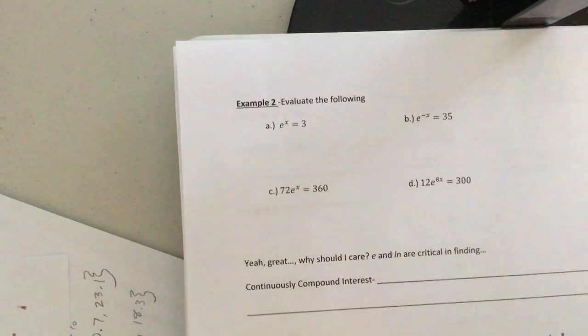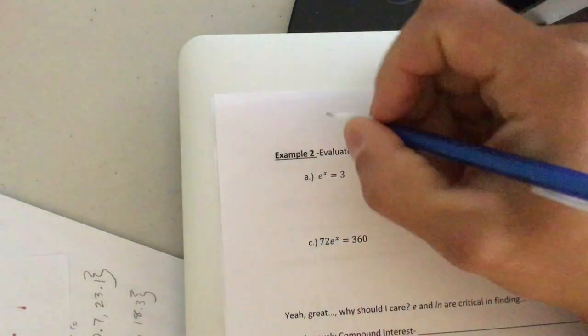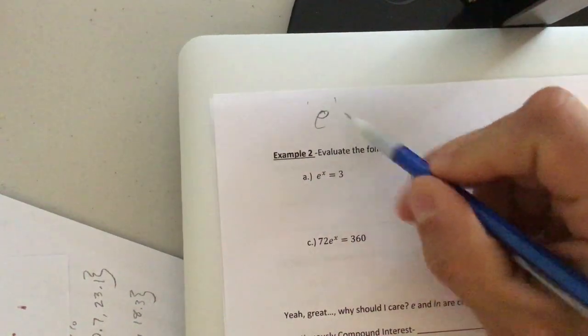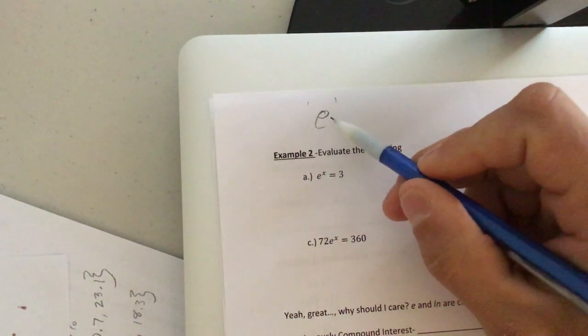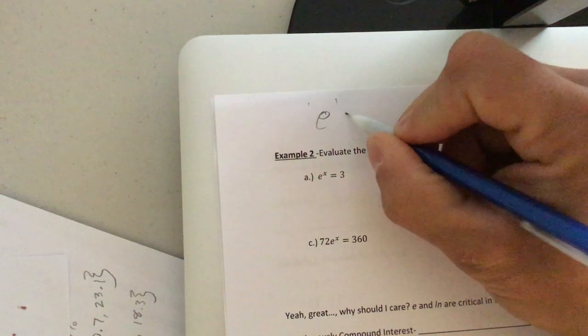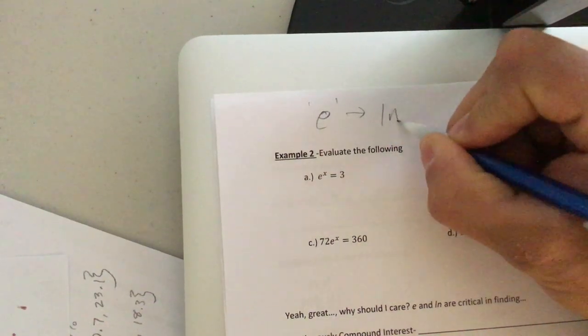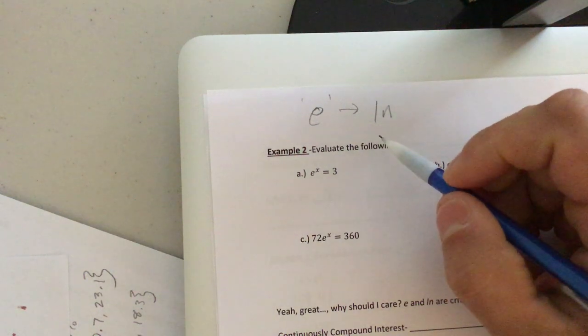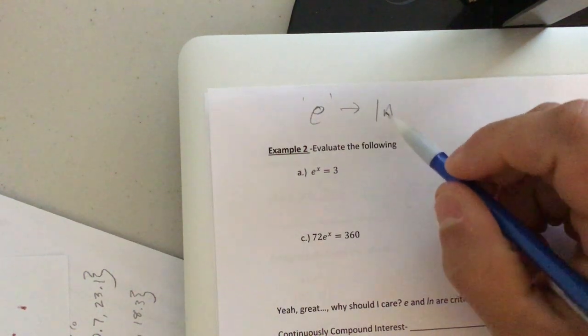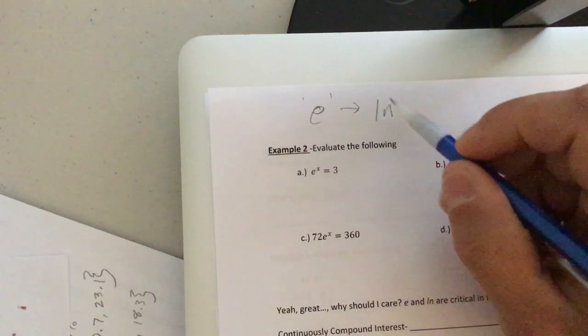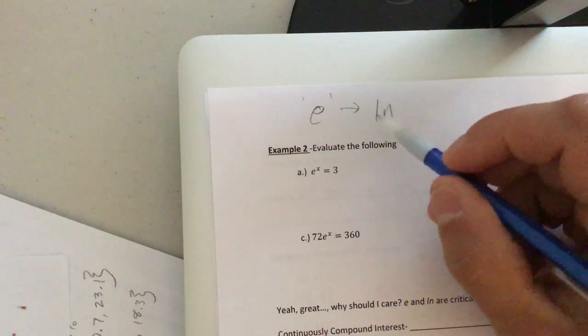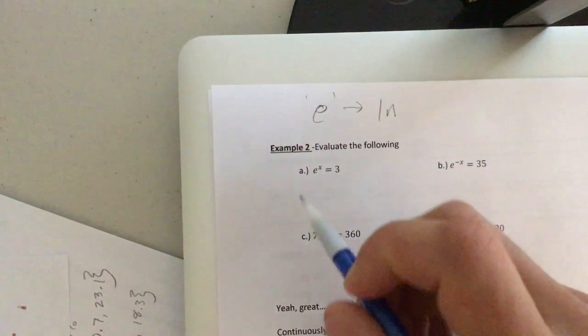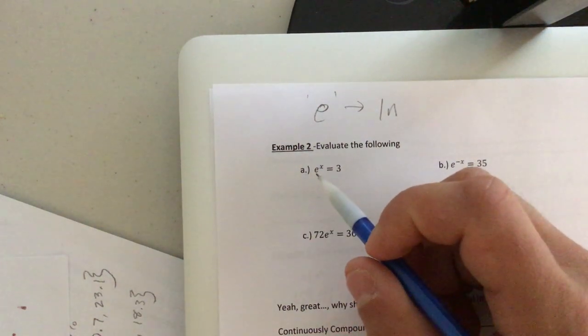So yesterday, just for recollection, we learned about base E, which is just the base for exponents. We also learned about the natural log or LN. These two are inverses of one another. That's going to be huge because we use the natural log to cancel out base E. If you're saying, what do you mean, Mr. Herr? You want to make sure you're tuned in on this.